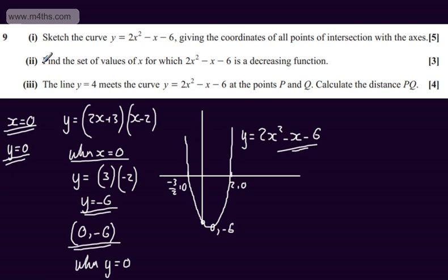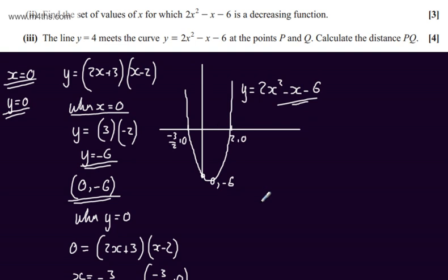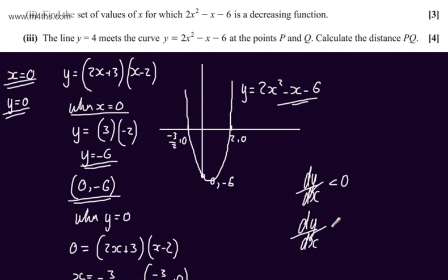In the second part of the question, for three marks, we're asked to find the set of values of x for which 2x squared minus x minus 6 is a decreasing function. We have a couple of choices. We could complete the square, or we could say that the derivative dy by dx, which is the gradient function, will be less than 0. So if we differentiate this, dy by dx will be equal to, taking our original expression, 4x minus 1.